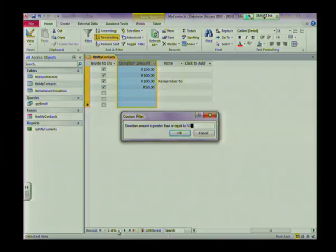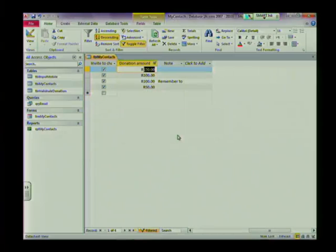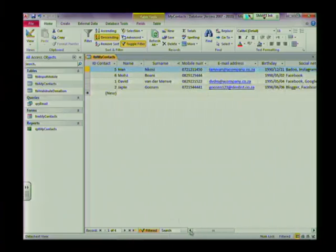Have a close look at the number of records at the bottom of your screen. At the moment we have six. Let's apply the filter by selecting OK. You'll see that we now only have four. That means that there's four people that paid 50 Rand or more. So if we scroll back to the side, there's our four people that donated 50 Rand or more.